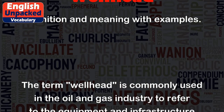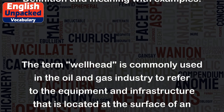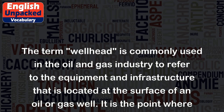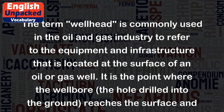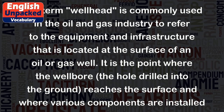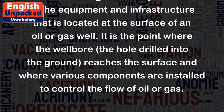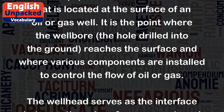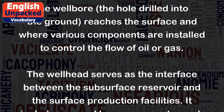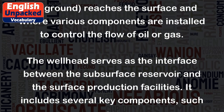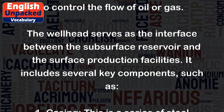The term wellhead is commonly used in the oil and gas industry to refer to the equipment and infrastructure that is located at the surface of an oil or gas well. It is the point where the wellbore, the hole drilled into the ground, reaches the surface and where various components are installed to control the flow of oil or gas. The wellhead serves as the interface between the subsurface reservoir and the surface production facilities.